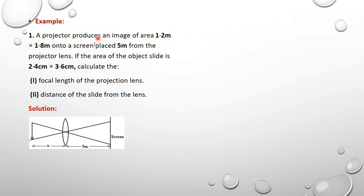So this is the image area. The screen is 5 meters from the projection lens. If the area of the object slide is 2.4 centimeters × 3.6 centimeters, calculate the focal length of the projection lens and the distance of the slide from the lens — that is, U.